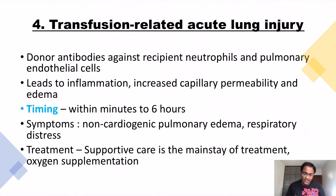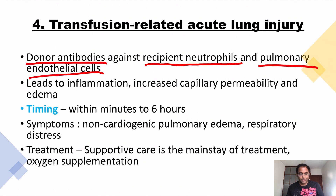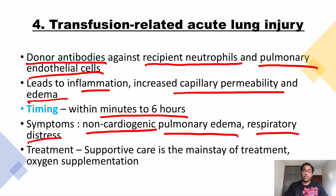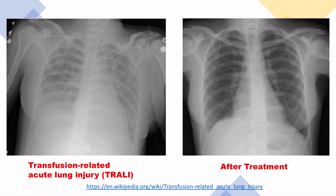In TRALI, donor antibodies react against recipient neutrophils and pulmonary endothelial cells, leading to inflammation, increased capillary permeability, and pulmonary edema. This occurs within minutes to six hours post-transfusion. The symptoms are non-cardiogenic pulmonary edema and respiratory distress — a really serious complication. Treatment is supportive: give oxygen because of the pulmonary edema and breathing difficulty. The chest X-ray shows a cloudy lung on the left (fluid in the lung), and on the right side after supportive treatment, the lung appears quite normal.